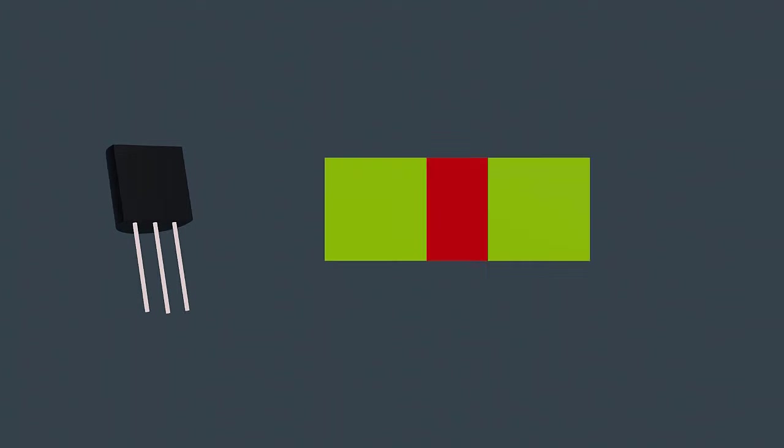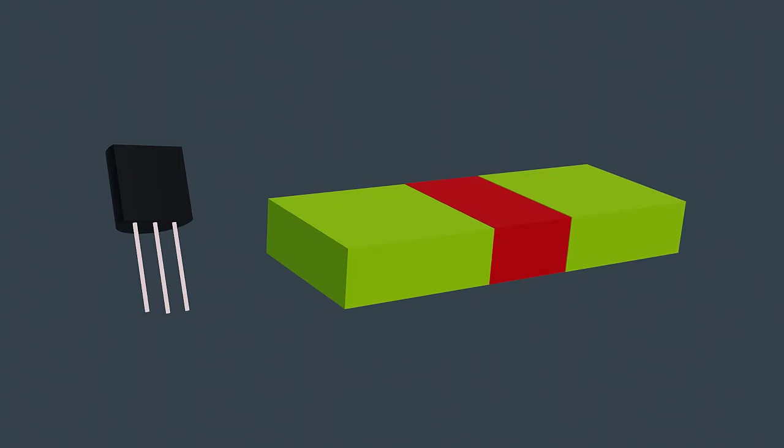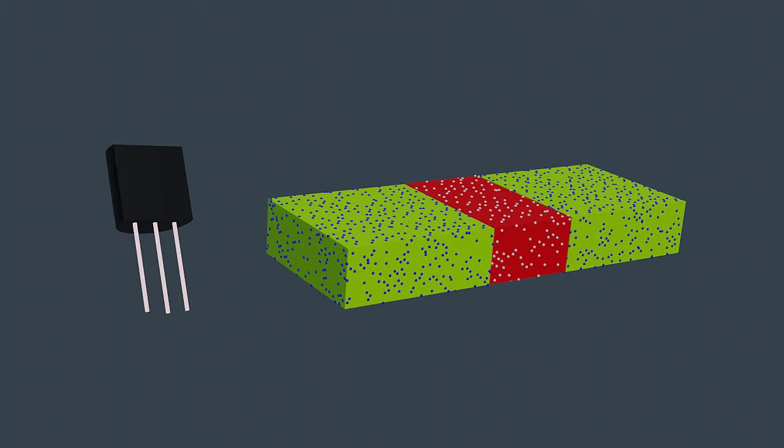A bipolar transistor has three layers of semiconductor material: the emitter, the base, and the collector. The emitter and collector are heavily doped, while the base is lightly doped.